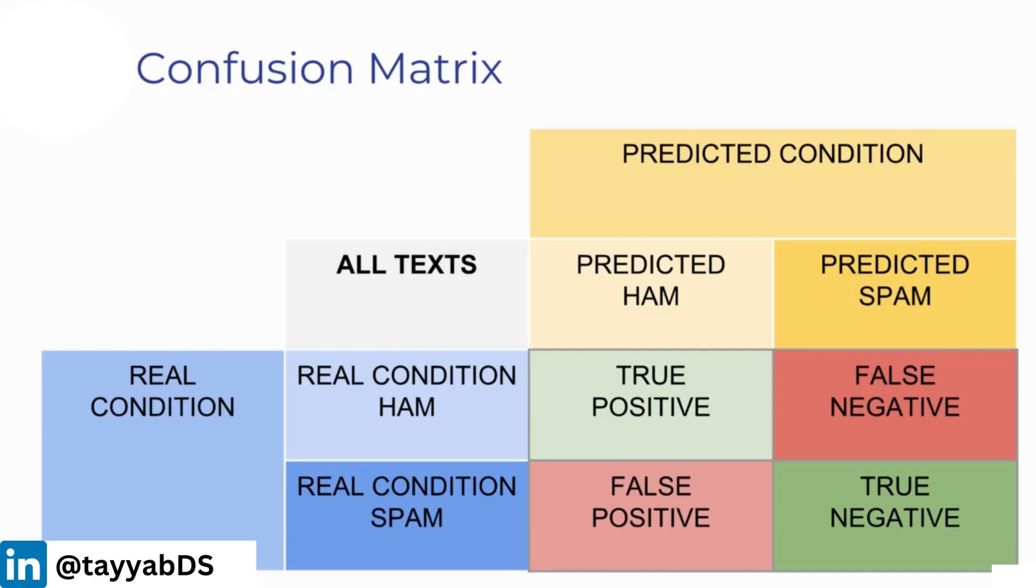Along the predicted condition, we have a false negative. That means the real condition was HAM, but our machine learning model incorrectly predicted it to be spam. We're labeling HAM as positive and spam as negative. We also have real condition spam and predicted HAM, that's known as a false positive, falsely identifying something to the positive class. And we also have true negative, correctly identifying something to the negative class, predicting spam for a spam text message.